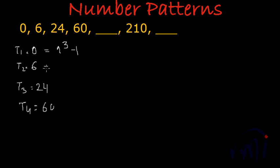For T3, the cube of 3 is 27, and minus 3 gives us 24. For T4, 4³ is 64, minus 4 gives 60. So the pattern appears to be n³ - n.